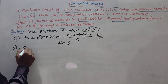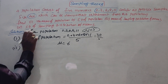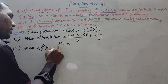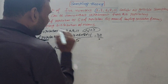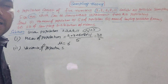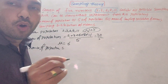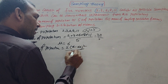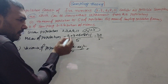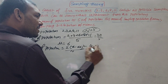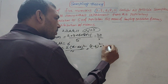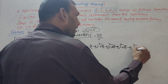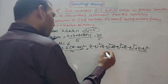Next, SD of population. First we calculate the variance, and the square root of variance is the SD. The variance of population formula is: sigma of (x minus mu) whole square, divided by n. Subtracting the mean (6) from each item: (2−6)², (3−6)², (6−6)², (8−6)², (11−6)², all divided by 5.